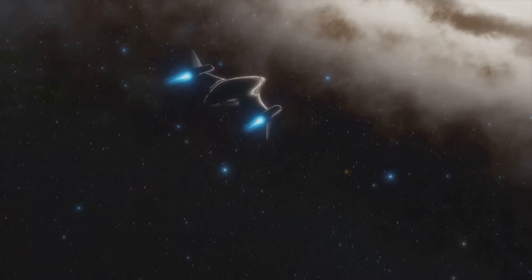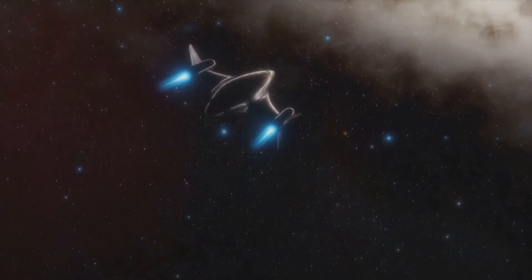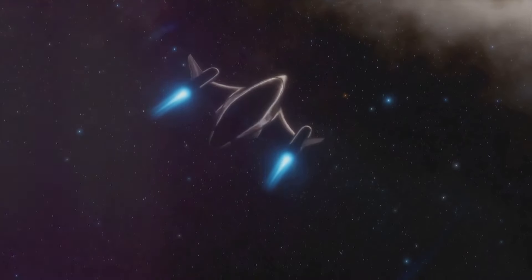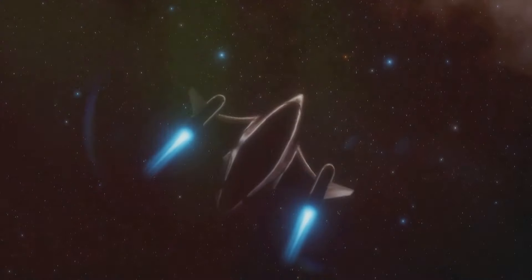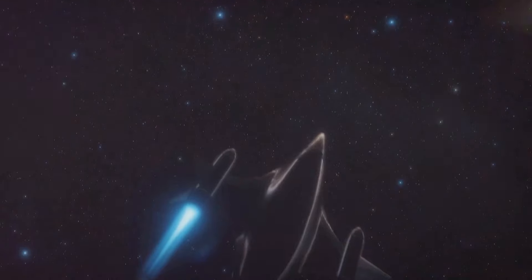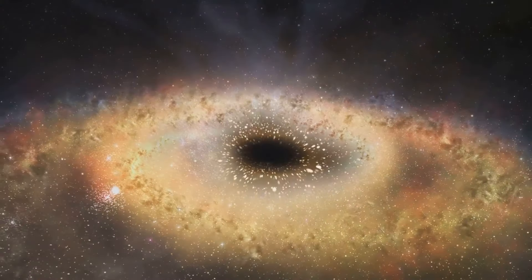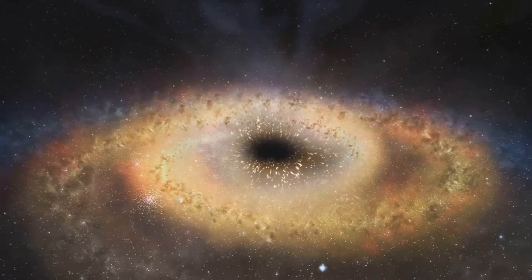But just as we know a ghost is there from the chill down our spine or the creaking of the stairs, we know dark matter is there because of the gravitational effects it has on galaxies and galaxy clusters. You see, dark matter has mass and anything with mass has gravity. It's this gravity that holds galaxies together. Without dark matter, the high speeds at which galaxies spin would cause them to fly apart.